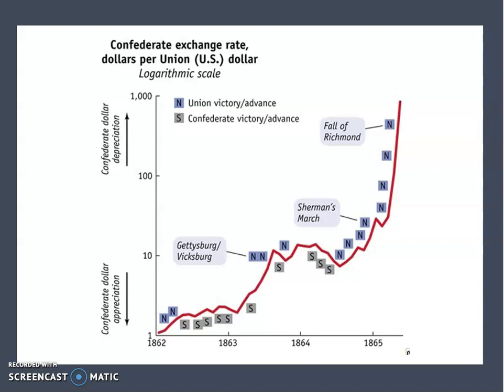For example, Confederate currency declined so much in purchasing power over time that eventually it took sixty to seventy dollars worth of southern cash to equal the value of even one U.S. gold-backed dollar. Basically, after the war, southern money was worthless, and this severely crippled economic reconstruction in the region for years.